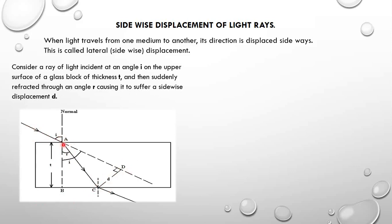How do we get it? We elongate this ray with dotted lines, and then draw a normal from point C to that line. That normal distance is the sideways displacement. So we consider triangle ABC. In triangle ABC, we can get SC. This is the hypotenuse and T is the adjacent, so we use cosine. Cos R equals the adjacent T over the hypotenuse SC, so SC equals T over cos R.